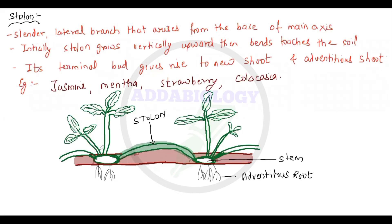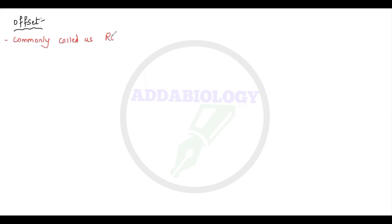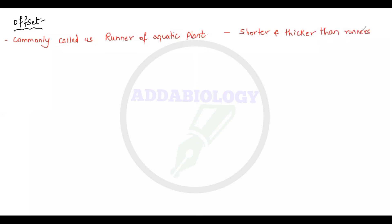The next example under sub-aerial modification is the offset. Offsets are commonly called aquatic runners — they run on or below the surface of water, unlike normal grass runners. They are shorter and thicker than runners and help in vegetative propagation, spreading from one place to another in aquatic conditions.